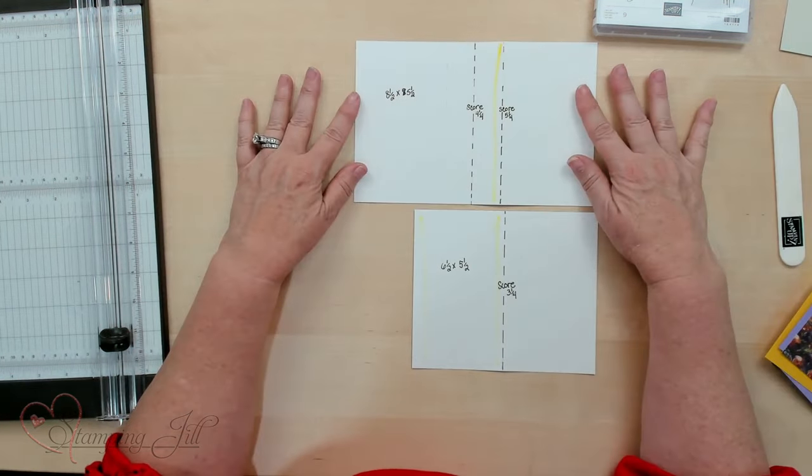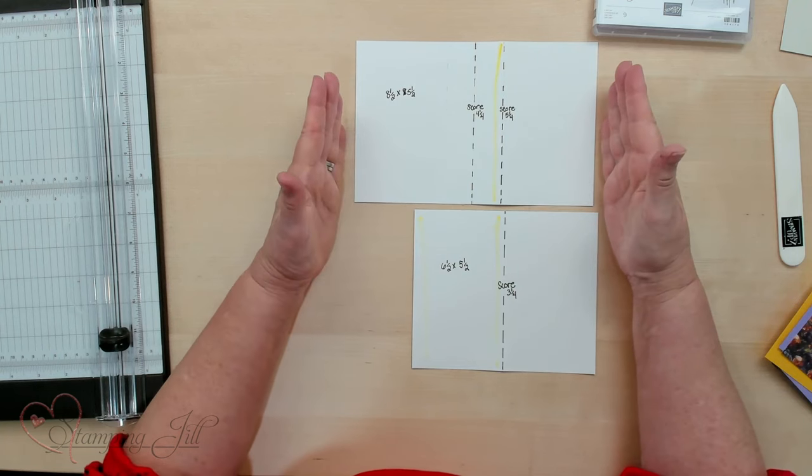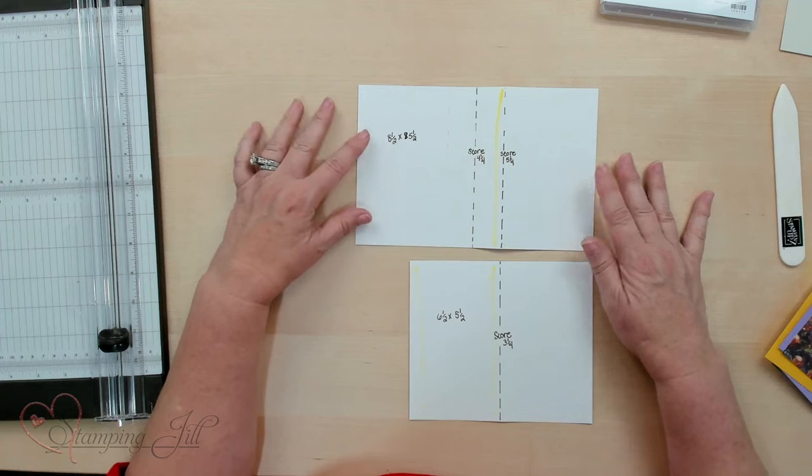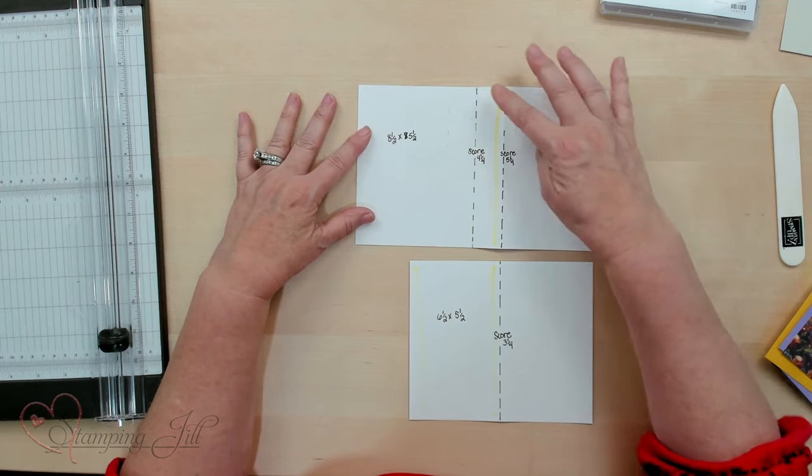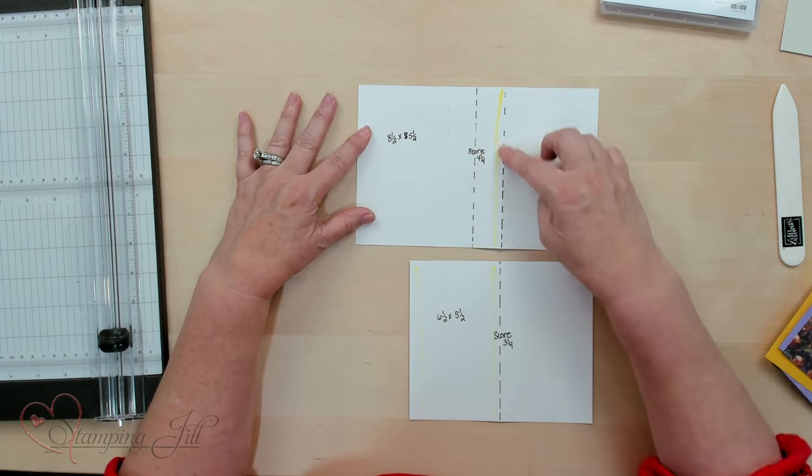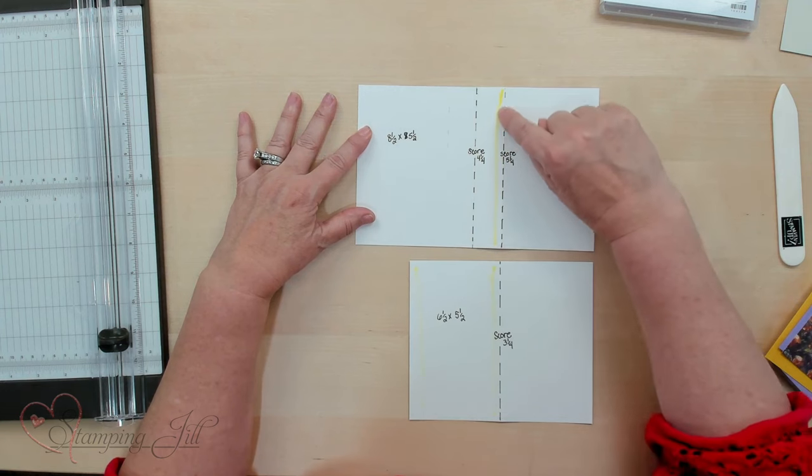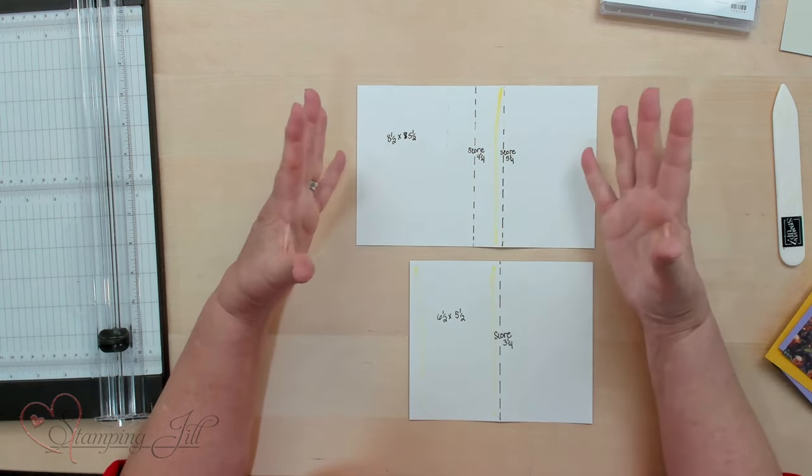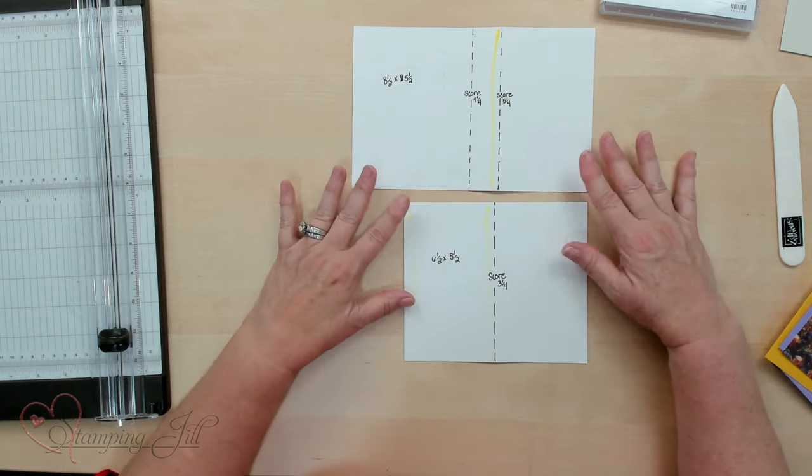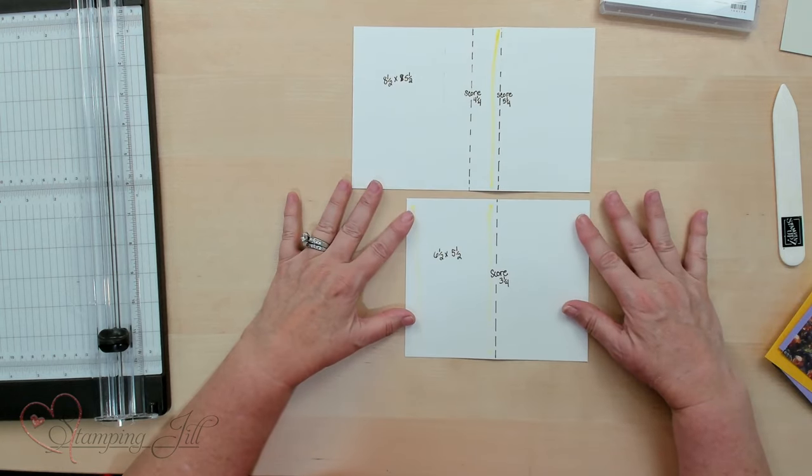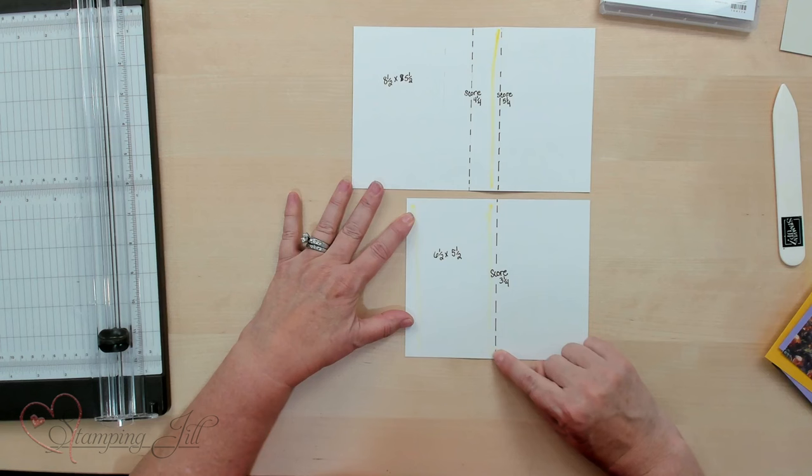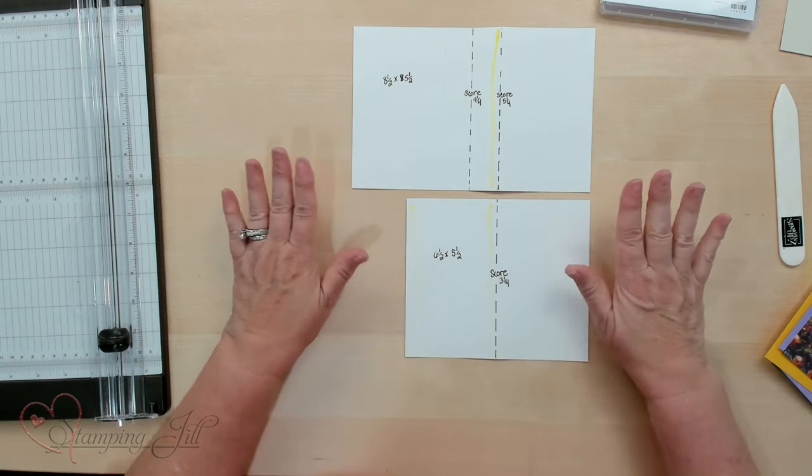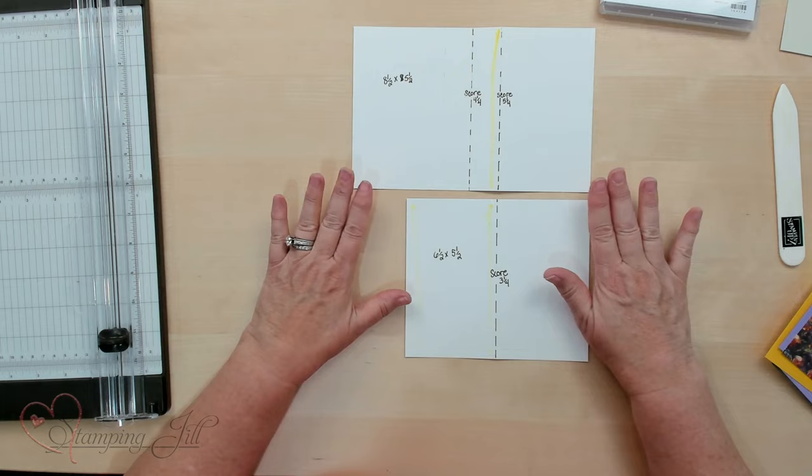This is the template to make the card and really out of one piece of cardstock you can make this card. The 8 1/2 x 5 1/2 piece of cardstock scored at 4 1/4 and 5 1/4 and the adhesive goes right here. I like to use the sticky strip on this because it really holds it together. Then the second piece is 6 1/2 x 5 1/2, scored at 3 1/4 and sticky strip right here. I'm going to go ahead and put one of these together so you can see how it is done.